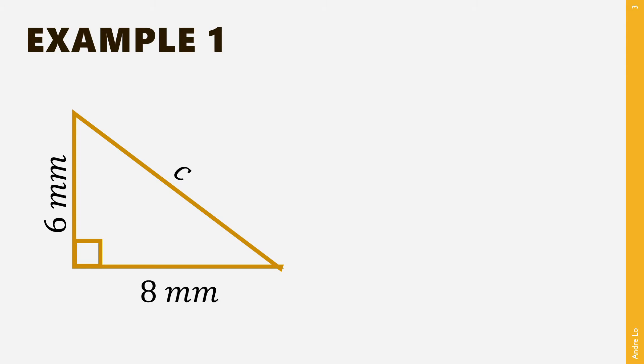In example 1, we have a right-angled triangle with perpendicular sides of length 6mm and 8mm. What we need to do is to find out what the length of the hypotenuse, in this case c, is.